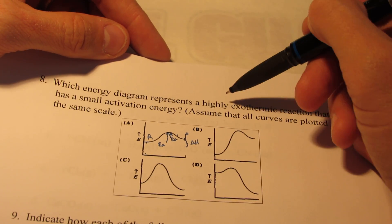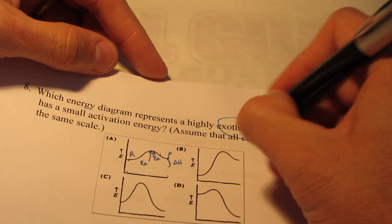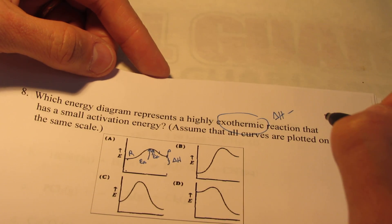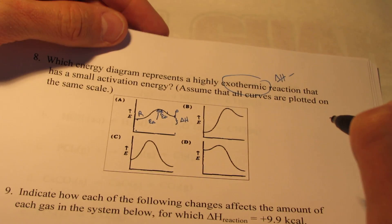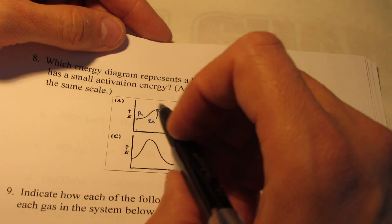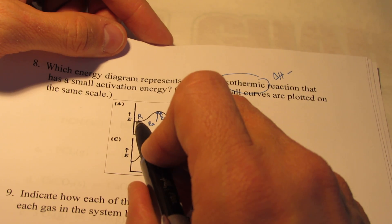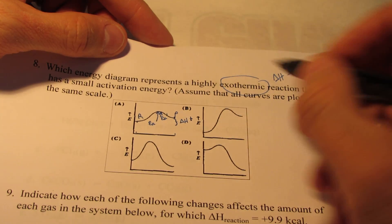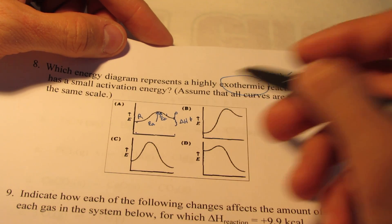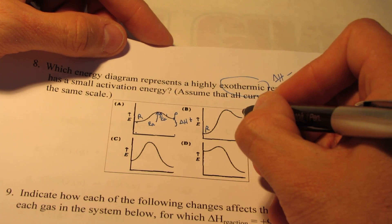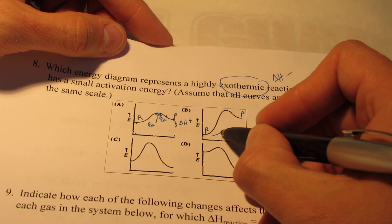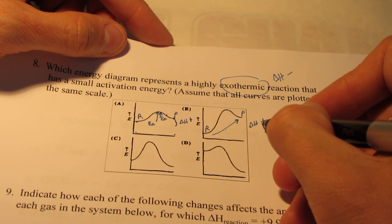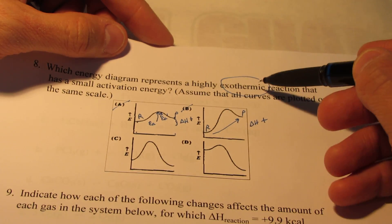So, let's take a look. Which energy curve represents a highly exothermic reaction? Now, exothermic means delta H is negative. Well, let's see. On this first graph, my reactants are here. My products gain energy, so delta H is positive there. This is an endothermic reaction. Let's take a look at letter B. Here are my reactants. Here are my products. Once again, I gain energy here, so delta H is positive. That's another endothermic reaction. So, A and B are not exothermic.